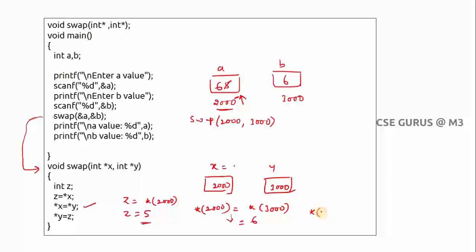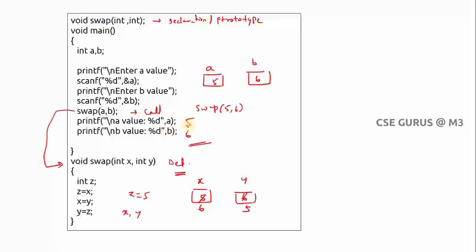Then *y = z — going to address 3000 and writing z which is 5. So location 3000 now holds 5. You can see that even though we are writing through addresses, the values of a and b are changed. Previously a was 5, now it became 6; previously b was 6, now it became 5. When we print a and b, the output is 6 and 5 — swapping happened. This is the concept of call by reference.